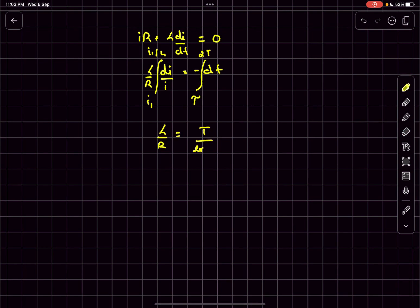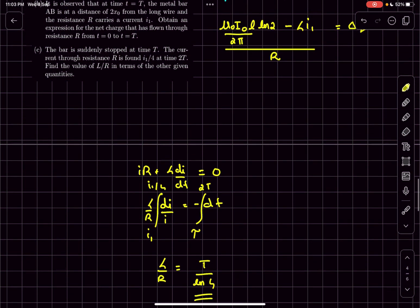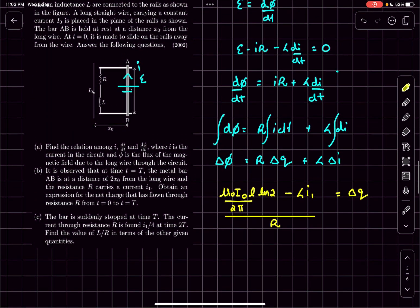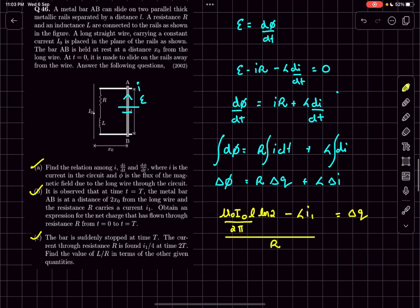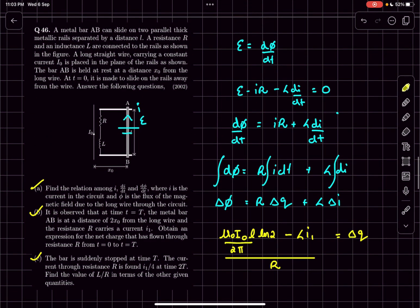So L/R = T / ln(4), which is what they asked us to find in part (c). That was it for this problem. If you have any doubts, comment down below. If you enjoyed the video, do like, subscribe, and share it with your friends. Thanks for watching!